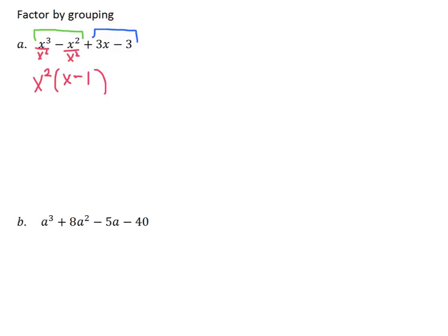Now take a look at the second set: 3x and negative 3. What do those have in common? They have a factor of 3. When your second grouping starts with a positive, we take a positive out — so we take out a positive 3. That's like dividing each term by 3. 3x divided by 3 is x, and negative 3 divided by 3 is negative 1.